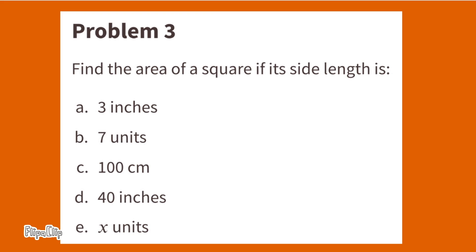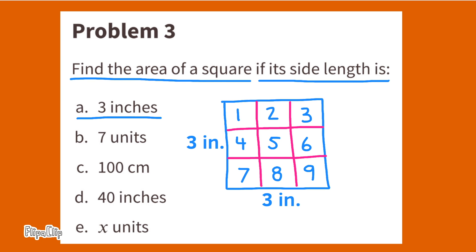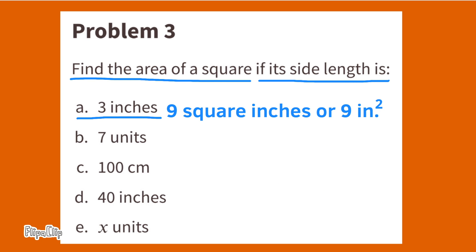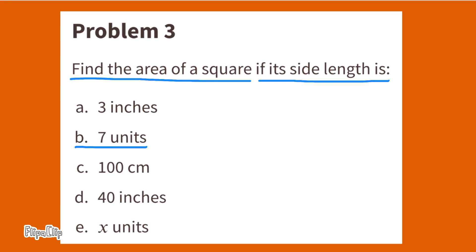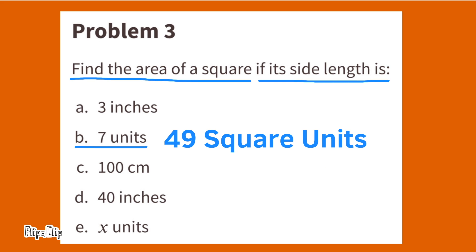Number 3: Find the area of a square if its side length is 3 inches. 3 inches times 3 inches equals 9 square inches. A square with side lengths 3 inches long would have an area of 9 square inches. Find the area of a square if its side length is 7 units. 7 times 7 is 49, so the area would be 49 square units, or 49 units squared.